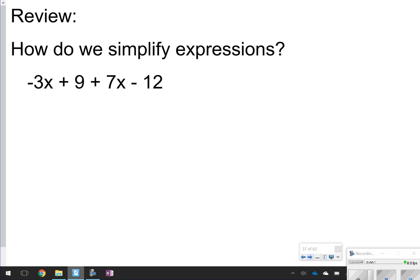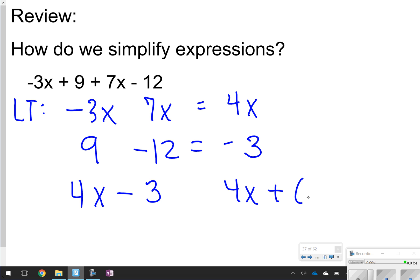First thing we want to make sure we know how to do is how we simplify expressions. Remember before we were listing like terms, so in this one the like terms are negative 3x and 7x. Together they make 4x, and then we also have positive 9 and negative 12, and together those make negative 3. To write the expression in its final form, we would write 4x minus 3, or 4x plus negative 3.